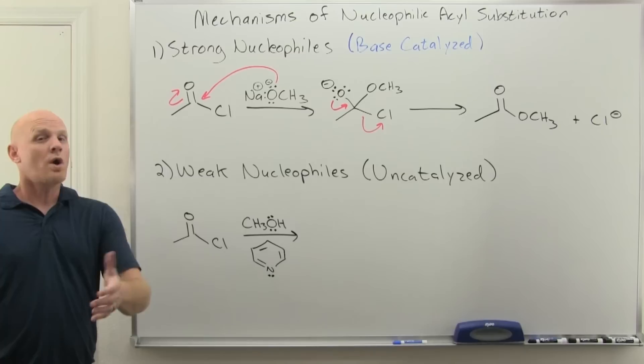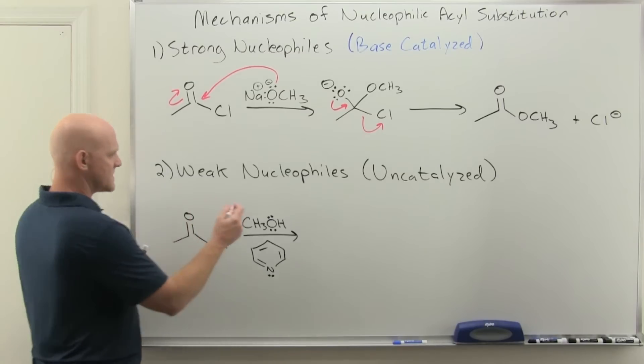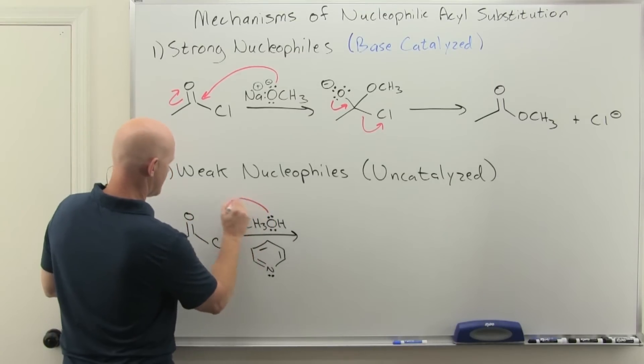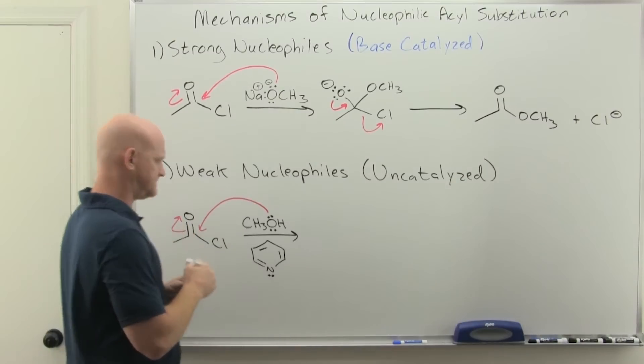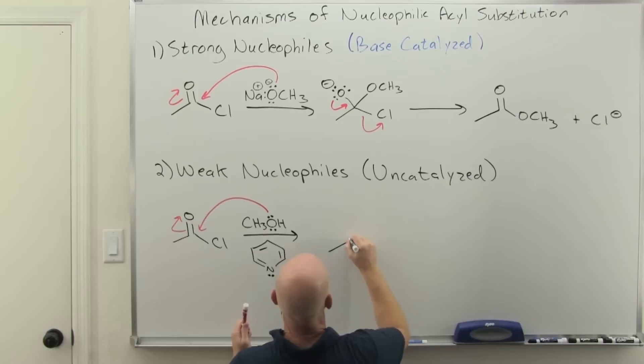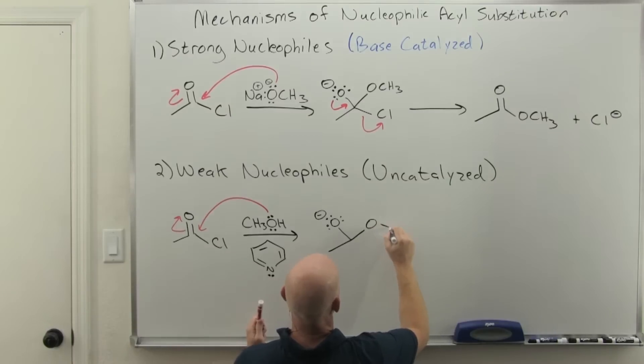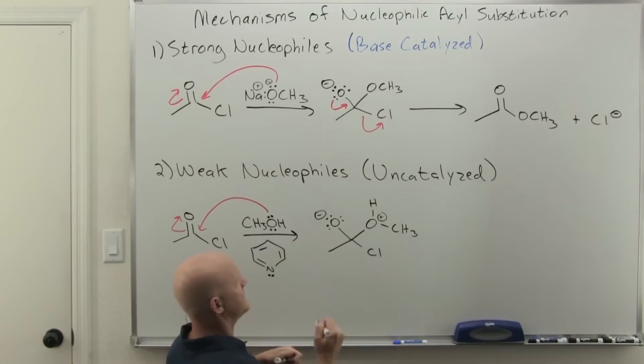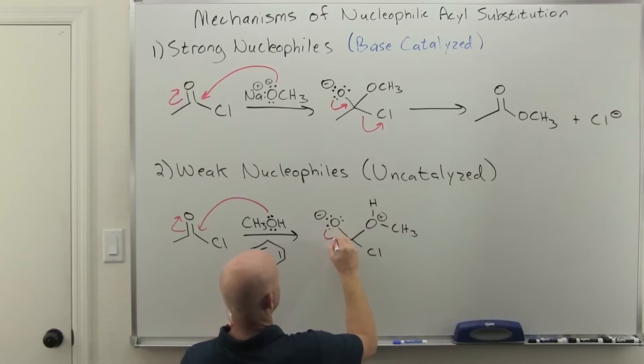All right, so this is gonna start off very similar to what we saw here. We're gonna have nucleophilic attack, push the pi electrons up, still form a tetrahedral intermediate here.